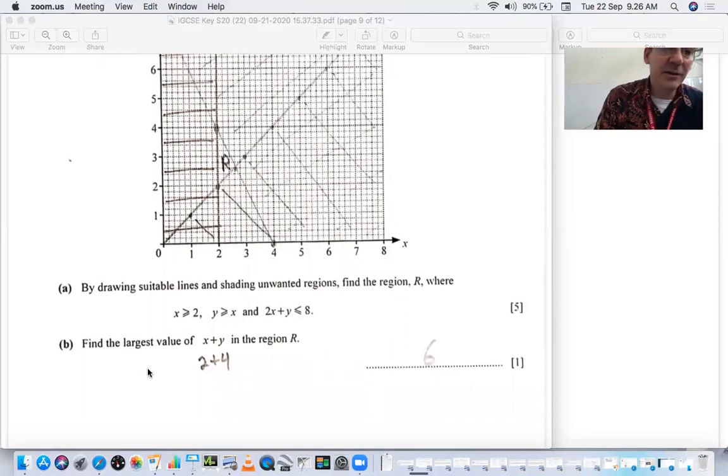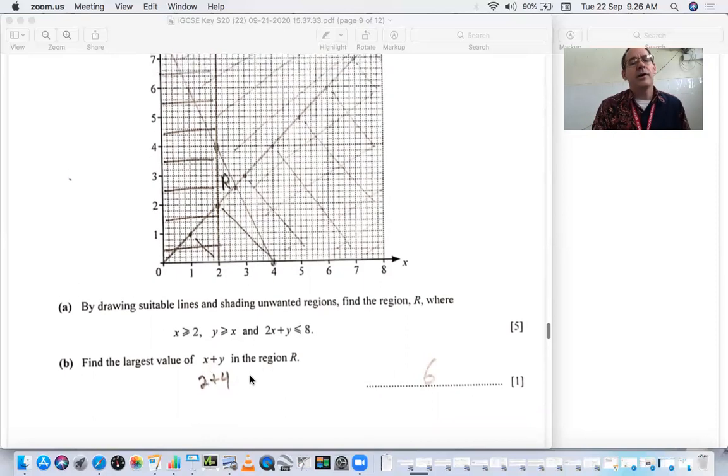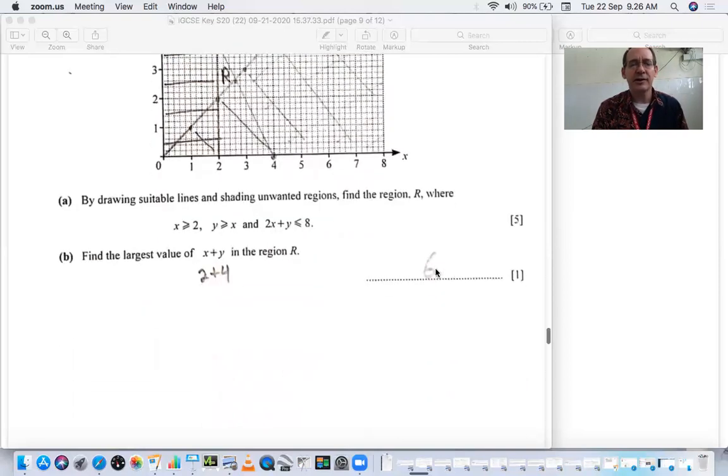So B, find the largest value in the region of X plus Y. When you're doing the feasibility region, your maximum or minimum comes from the vertex. Since this is maximum, it's usually going to be the highest vertex, which is 2, 4. 2 for X, 4 for Y. So 2 plus 4 is 6.